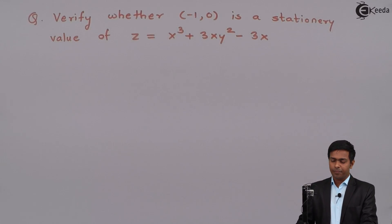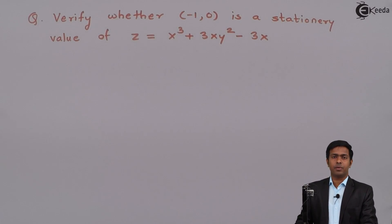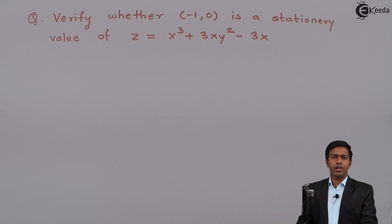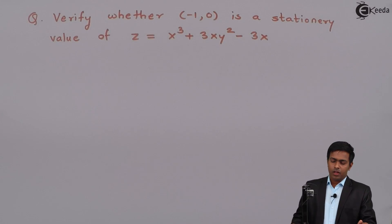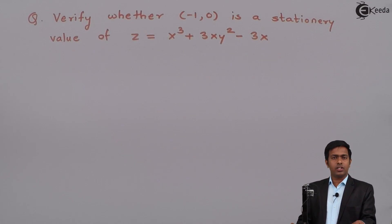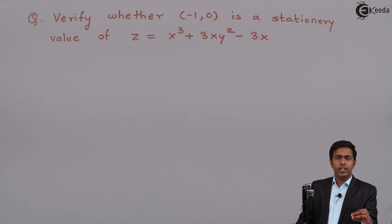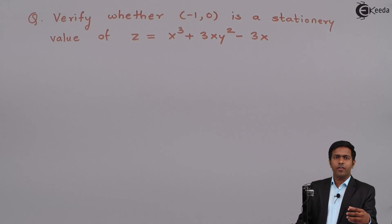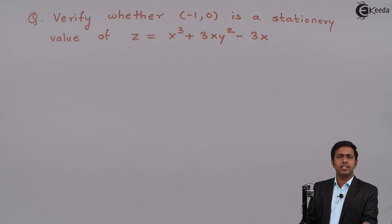What are those conditions? We know that at a stationary point we get minima or maxima. At a stationary point we know that fx, that is ∂f/∂x, and ∂f/∂y, are both equal to 0. So here to check whether minus 1 comma 0 is a stationary point or not, I will check whether ∂f/∂x is 0 and ∂f/∂y is also 0, and then we will check whether at this point we are getting minima or maxima.